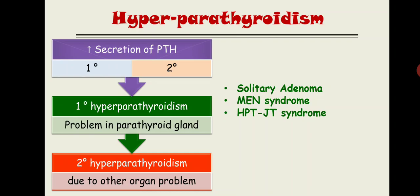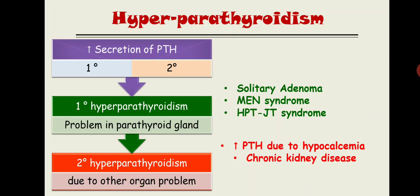Secondary hyperparathyroidism is increased PTH due to hypocalcemia from causes outside the gland, the main one being chronic kidney disease. This condition is reversible once calcium levels normalize. The key difference: primary hyperparathyroidism has increased calcium, while secondary hyperparathyroidism has decreased calcium, with phosphate behaving oppositely.